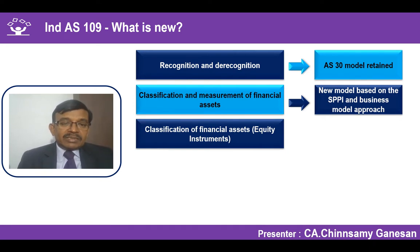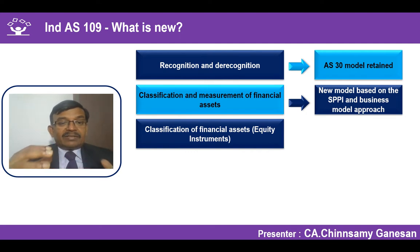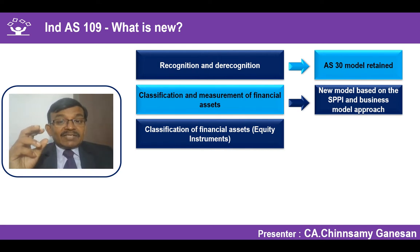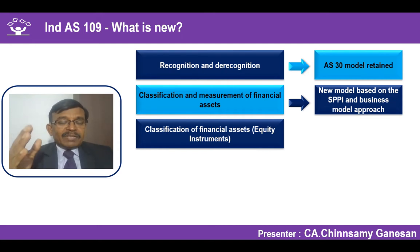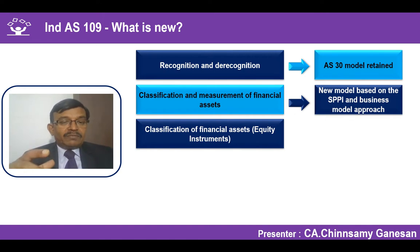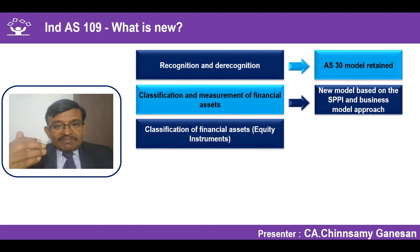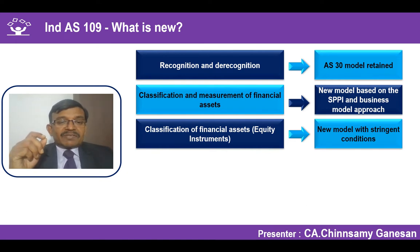When talking about these two tests - SPPI and business model approach - for financial assets, there is a separate model especially for equity instruments. Other than equity instruments, the principle requires you to go with the SPPI test and business model approach. For equity instruments, separate guidance is given. We will use flowcharts to help you differentiate between the classification principles of other-than-equity instruments and equity instruments. For equity instruments, a new model with stringent conditions has come in.